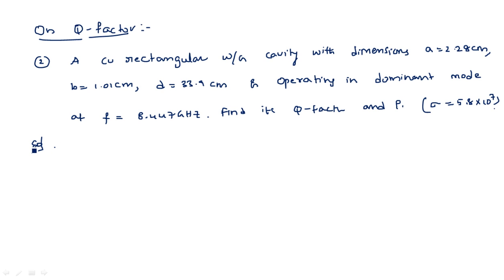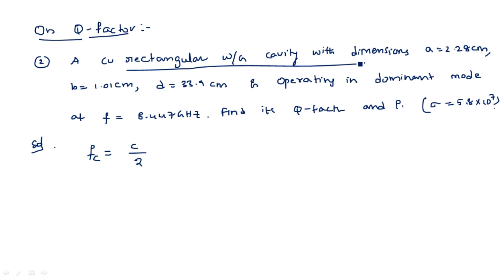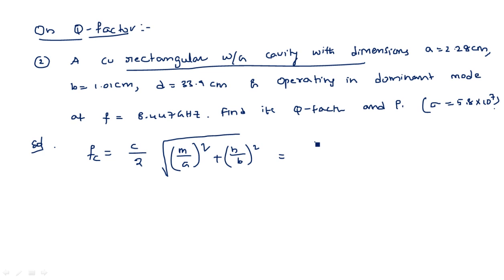This type of question appears in examinations on circular or rectangular cavity resonators for the calculation of Q. You should discriminate which type of cavity resonator it is — circular or rectangular — because the formula depends on that. For cutoff frequency: f_c = (c/2) × √[(m/a)² + (n/b)²].